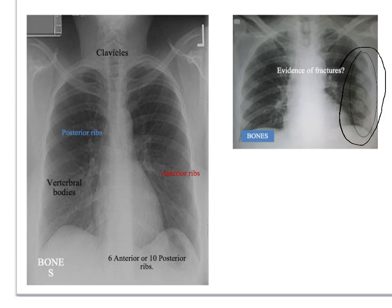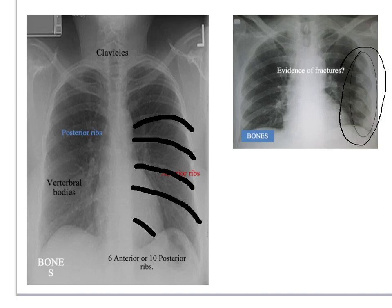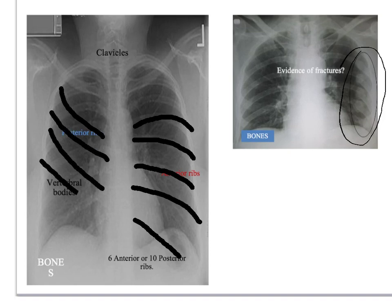Be aware of which ribs are which. The posterior ribs run along in one direction and you should see up to ten. The anterior ribs run in a slightly different direction and are harder to see, but you should be able to identify six. If you can see more than six anterior ribs, then the lung may be hyperexpanded.